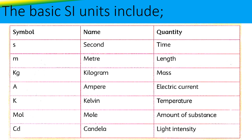The basic SI units include: the symbol S, meaning second, is the SI unit for time. M, which stands for meter, is the SI unit for length. Kg, meaning kilogram, is the SI unit for mass.